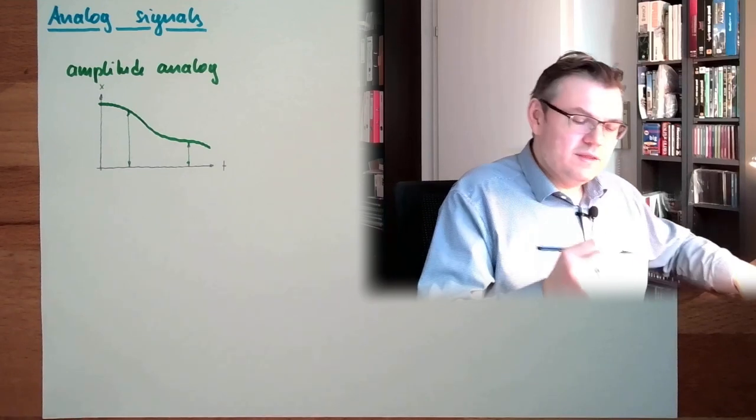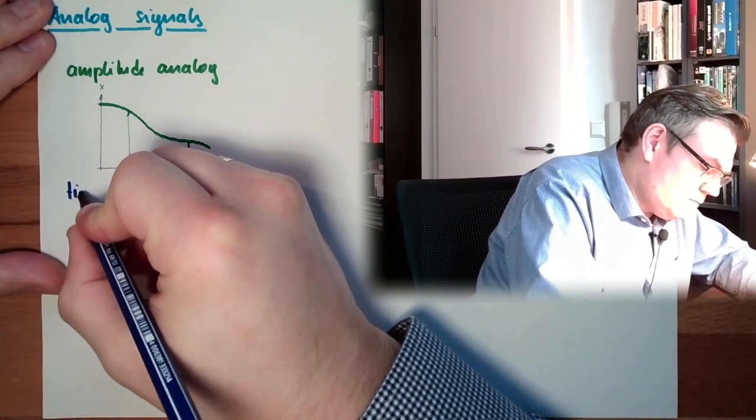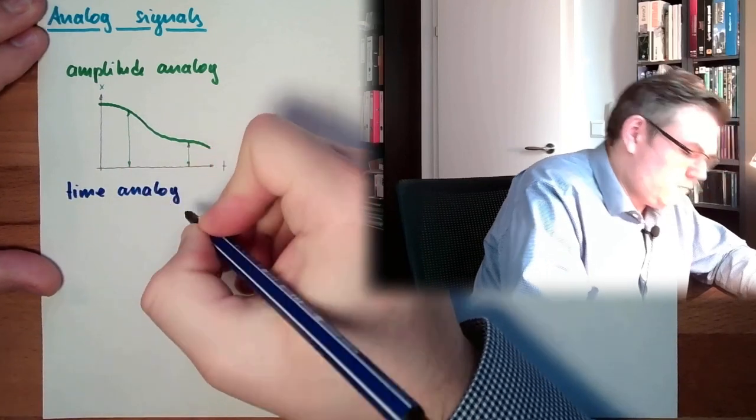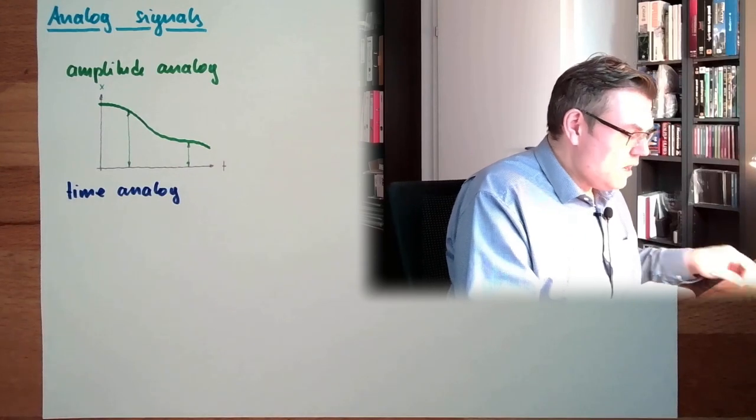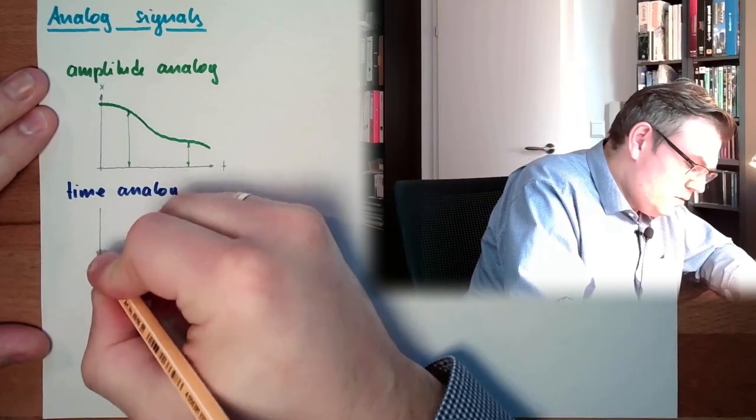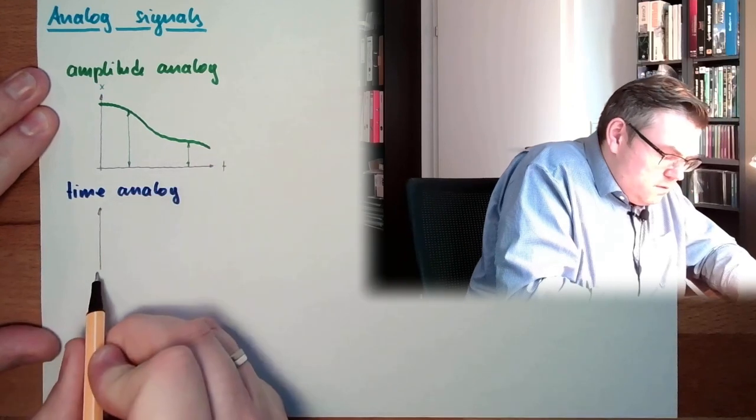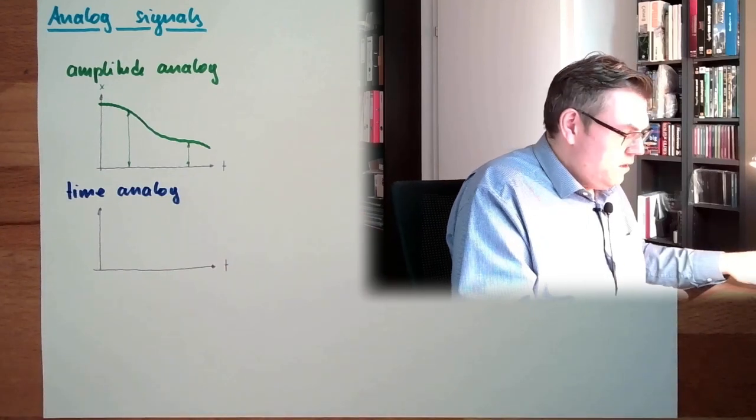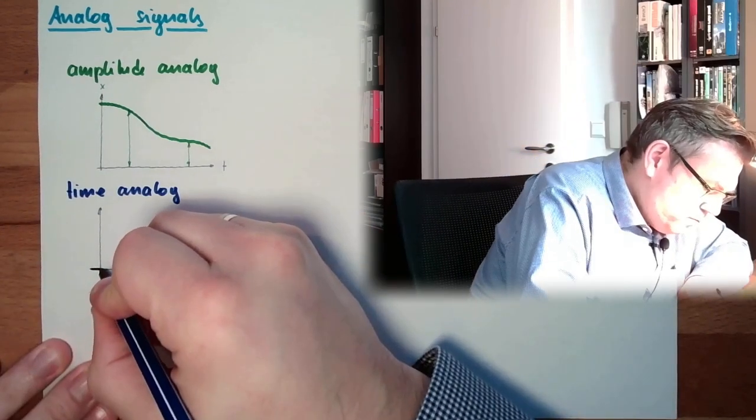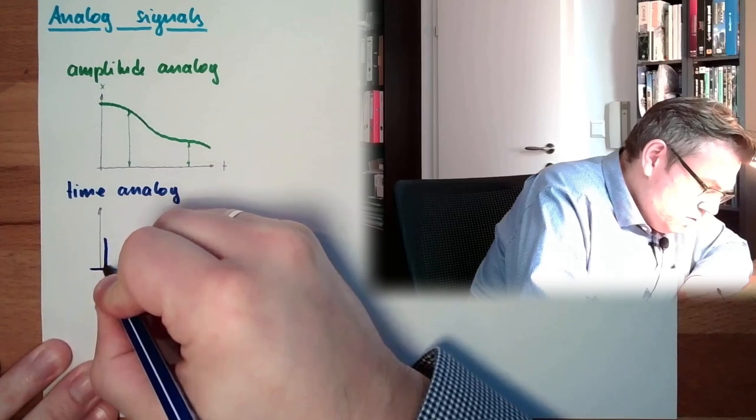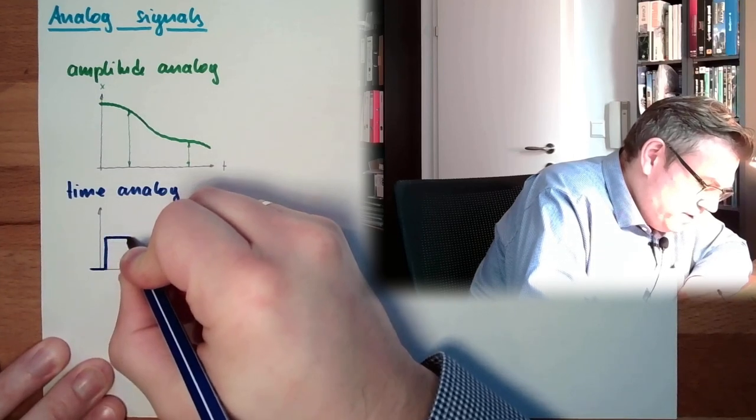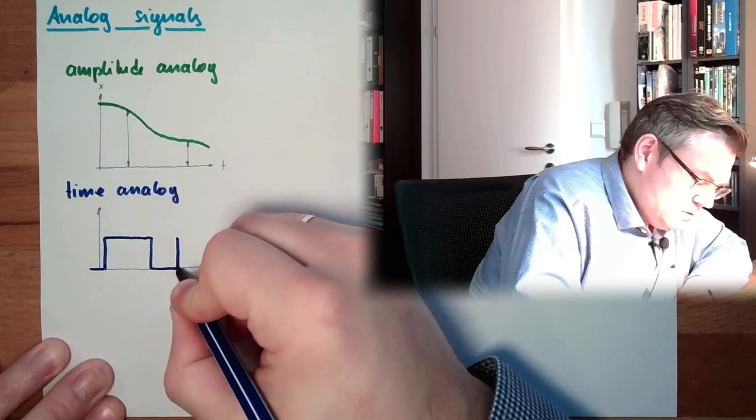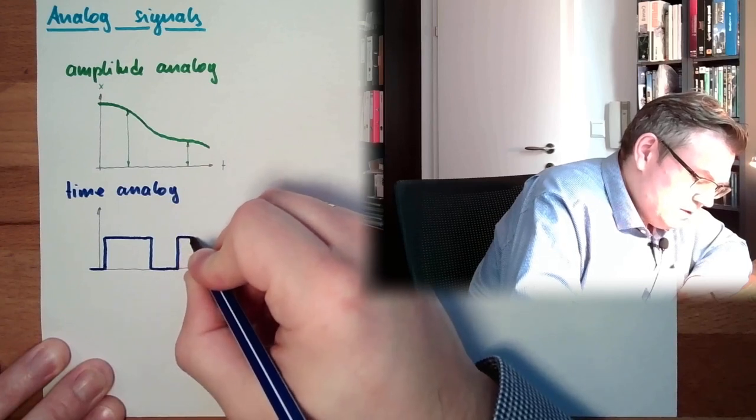What else could there be? There could be a so-called time analog signal. How is this working? We'll also draw a chart. There's the t. And then, we have, at one point in time, we go to a certain value, stay at this certain value, and then drop. Then the next information, stay at this certain value, but shorter.